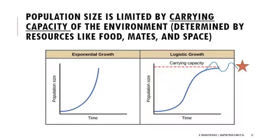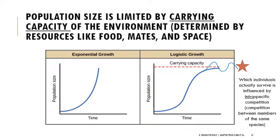When looking at a plot of logistic growth, you should be able to identify where it plateaus and determine the carrying capacity. Something is stopping everyone from surviving — a lot of that comes down to intraspecific competition for food, mates, and space. Competition between members of the same species limits population size and determines carrying capacity.